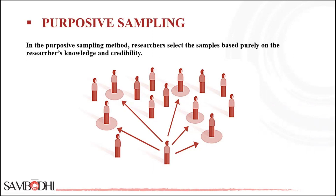That's one downside of this sampling technique. Another downside is that the preconceived notions of the researcher can influence the result. As with other non-probability techniques, there are a lot of biases happening, and thus this research technique involves a higher amount of ambiguity.